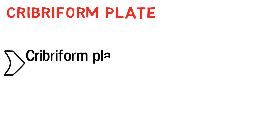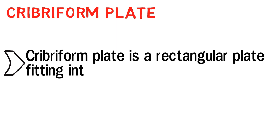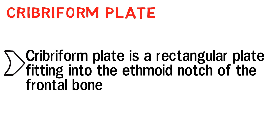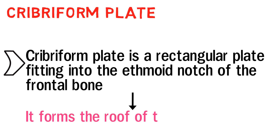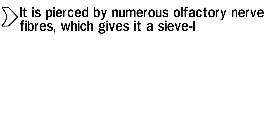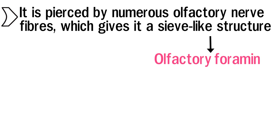Starting with the cribriform plate. It is a rectangular plate fitting into the ethmoid notch of the frontal bone, and it forms the roof of the nasal cavity. If you want a separate video on the nasal cavity, drop a comment down below. The cribriform plate is pierced by numerous olfactory nerve fibers, which gives it a sieve-like structure called the olfactory foramina.